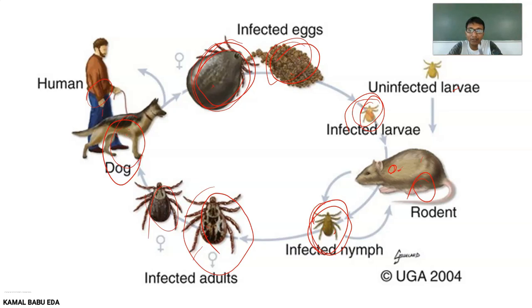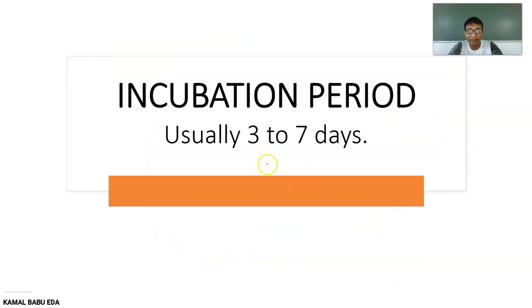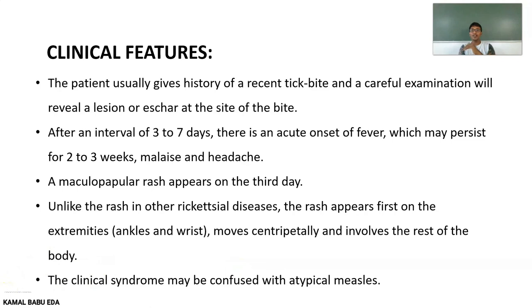Indian Tick Typhus is mainly transmitted to men through ticks only — specifically ticks present on pet animals — not from person to person. The incubation period is about three to seven days.